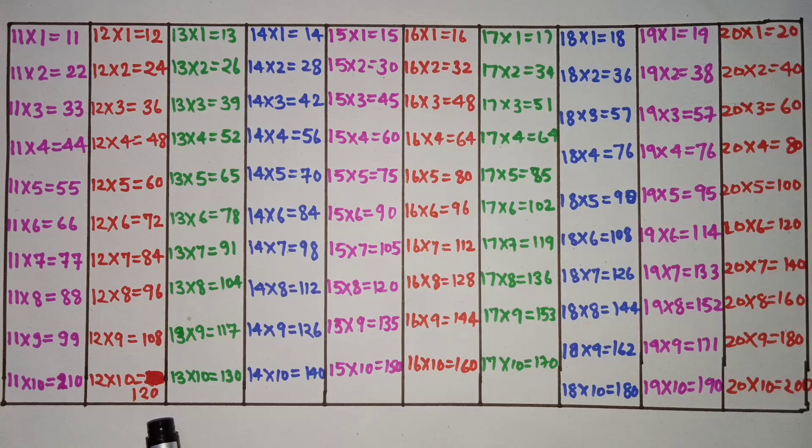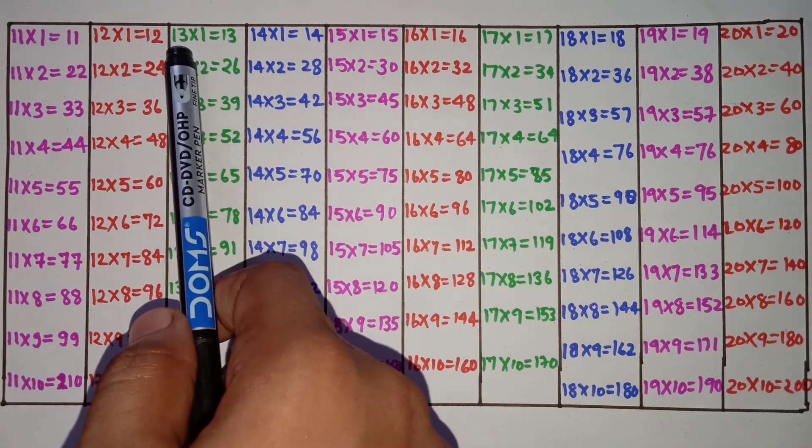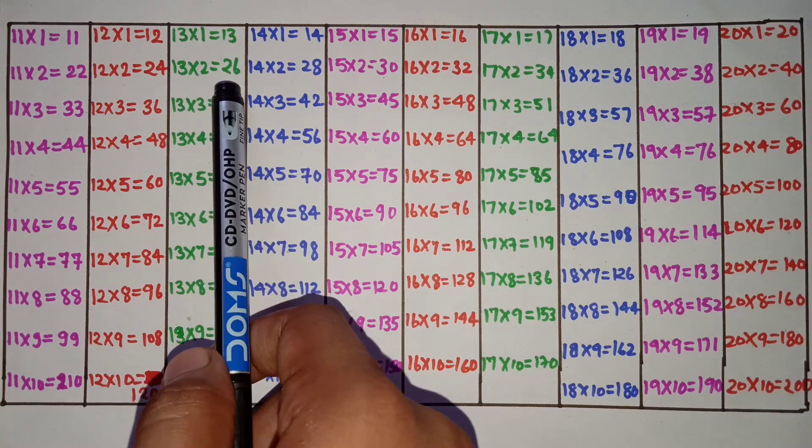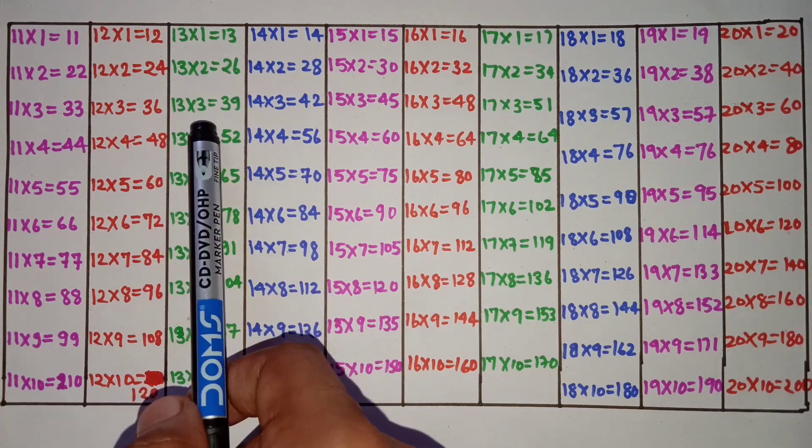12 nines are 108, 12 tens are 120, 13 ones are 13, 13 twos are 26.